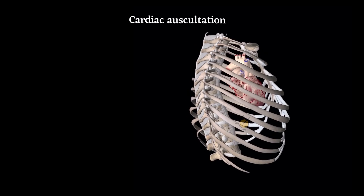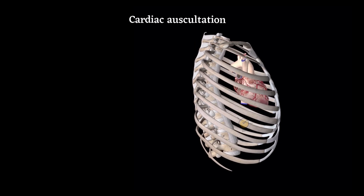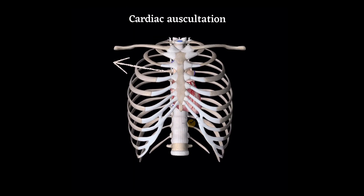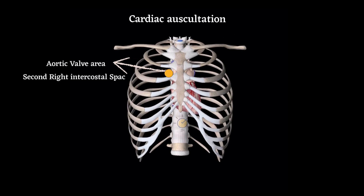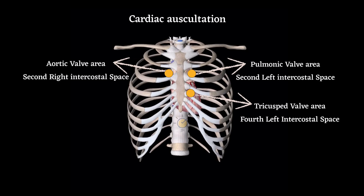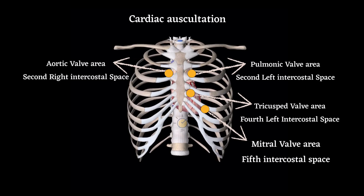Cardiac auscultation is performed systematically over four main locations on the anterior chest wall: the aortic valve area at the second right intercostal space, the pulmonic valve area at the second left intercostal space, the tricuspid valve area at the fourth intercostal space, and the mitral valve area at the fifth intercostal space left mid-clavicular line.